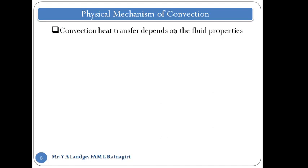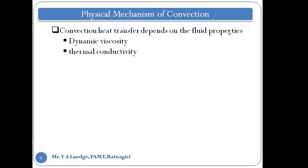The first parameter is the fluid properties. Fluid properties are very important, so convection heat transfer depends on the fluid properties. We take four properties: the first one is dynamic viscosity, then thermal conductivity, density, and specific heat.